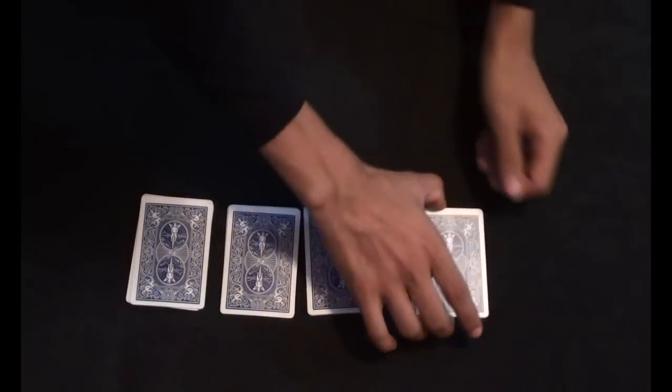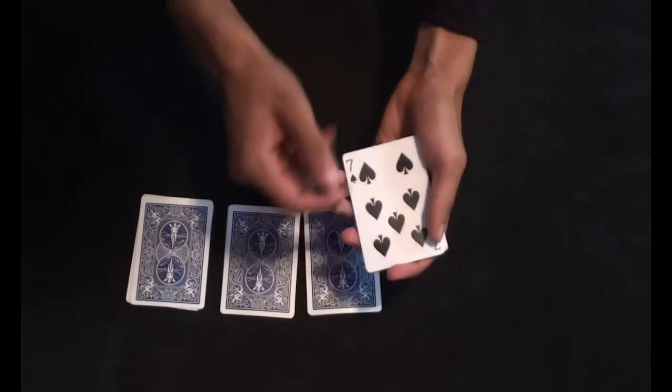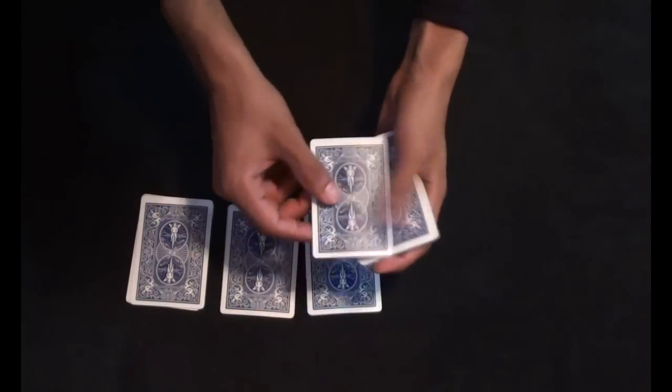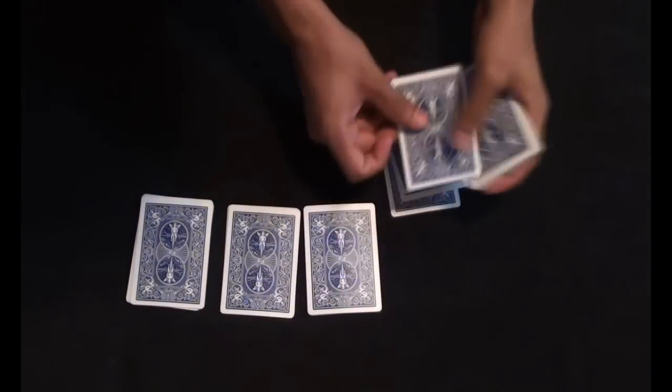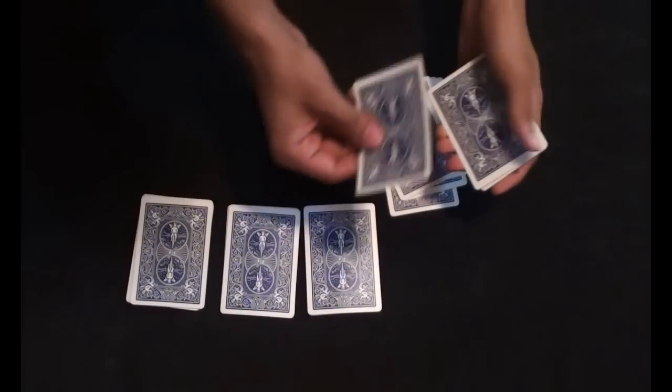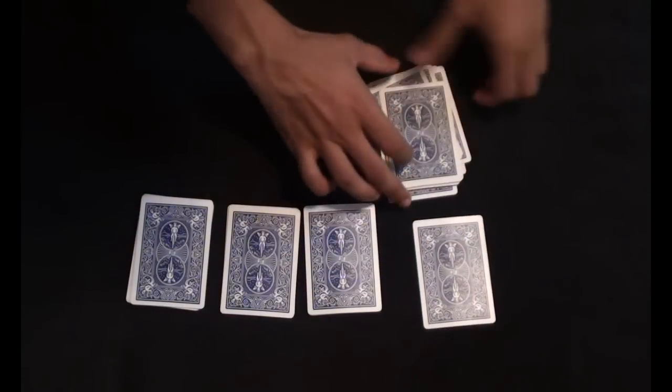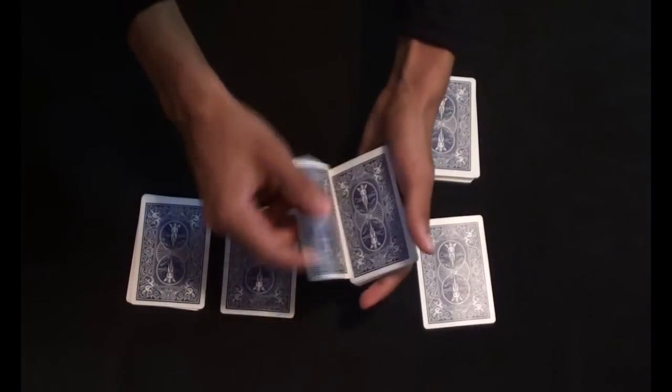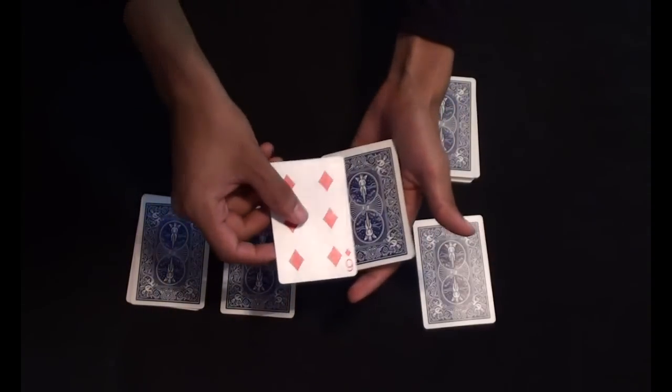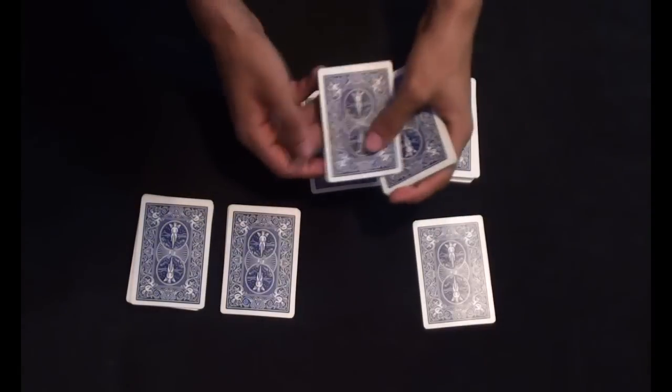Now let's see what the top card of the first pile is. It's a seven, so I'm gonna take the seventh card of this pile. One, two, three, four, five, six, and the seventh card. Let's see what the top card of the next pile is. It's a six, so I'm gonna take the sixth card. One, two,